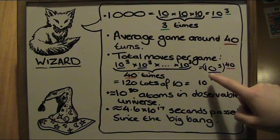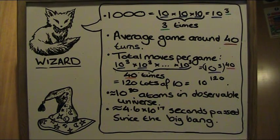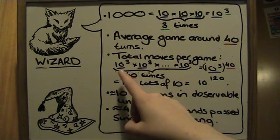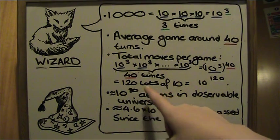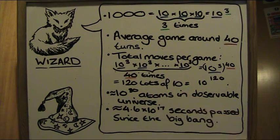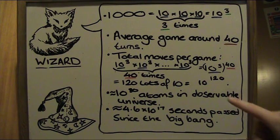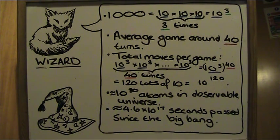So we can write ten cubed to the power of forty. If you know how to multiply powers, this is easy. However, if you don't, consider that there are ten times ten times ten, written out forty times. By simple multiplication we can see there are 120 lots of ten. And using powers again, this 120 lots of ten is ten multiplied by itself 120 times. So we can raise it to ten to the power of 120. This is also called Shannon's number.